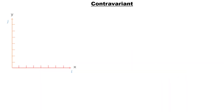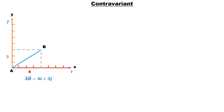First of all, let's talk about contravariant. To understand this, let's take a first rank tensor — a displacement vector. If we write this vector by breaking it into its components, then vector AB will be equal to 4i-cap plus 3j-cap, where i-cap and j-cap are unit vectors or coordinate basis, while 4 and 3 are components along the basis vectors.